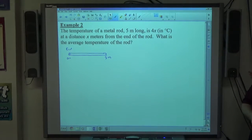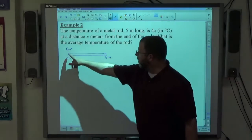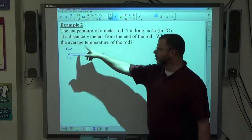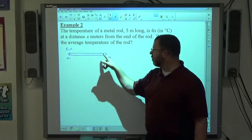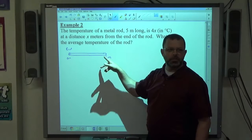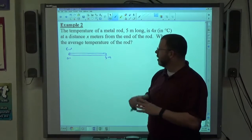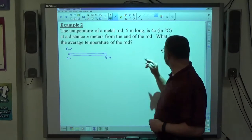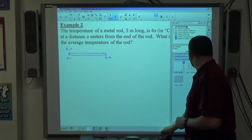The further away from the end of the rod I get, the hotter it gets. So, at the end, 4 times 0 is 0 degrees Celsius. Over here, 4 times 5 is 20 degrees Celsius. Okay, so it's hotter over here. So there's some sort of a heat source. Maybe there's a light bulb here.